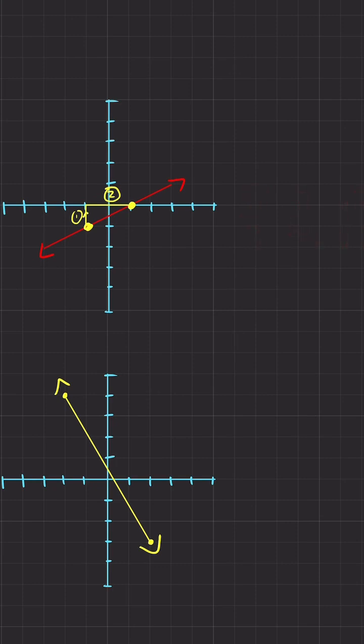This is also important. Up is always positive and right is always positive. And since slope is rise over run, which is vertical over horizontal, this is going to be positive one over positive two.